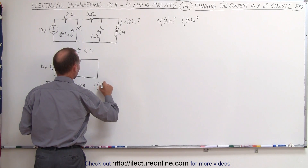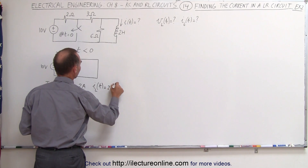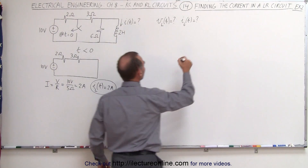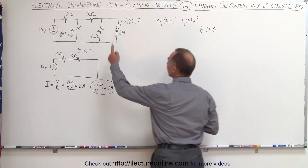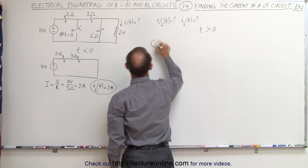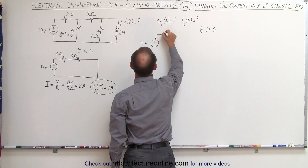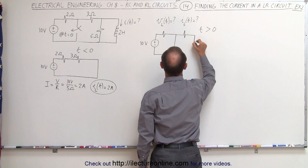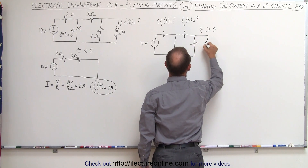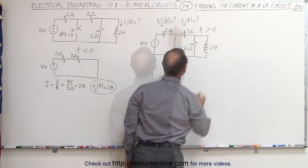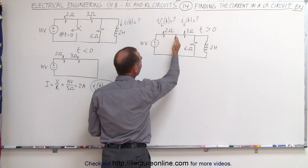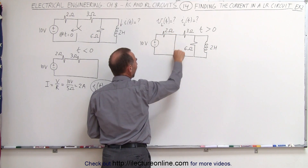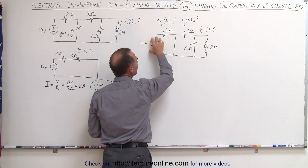So the initial current through the inductor, I sub L, is equal to 2 amps. Now that we know that, let's go to the situation when the time is after T equals 0. So now T is greater than 0, that means the switch will have closed, and the circuit will look as follows: 10 volt voltage supply, a 2 ohm resistor, short circuit, back to the voltage supply, and on this side, a 3 ohm resistor, a 6 ohm resistor, and we have an inductor. Once we close the switch, any current coming out of the 10 volt voltage supply will go through the 2 ohm resistor but then follow the short circuit path back to the voltage supply, and none of the current coming from here will go to this part of the circuit.